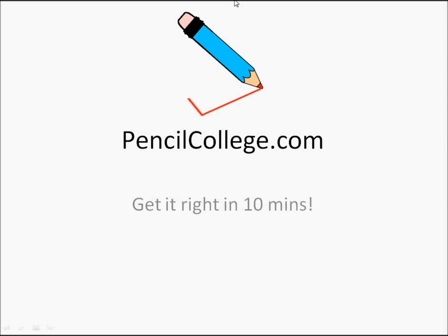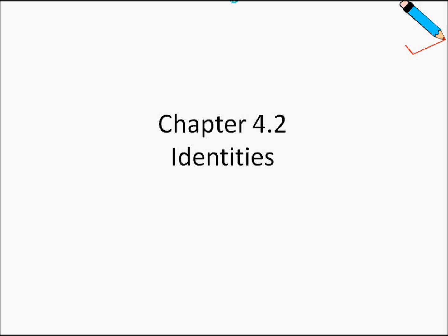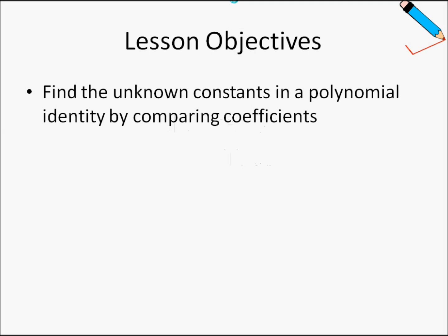Hey guys, welcome to Pencil College. In today's video, we'll be moving on to chapter 4.2 on identities. Let us first look at the lesson objectives for this chapter. We want to learn how to find the unknown constants in a polynomial identity by comparing coefficients.